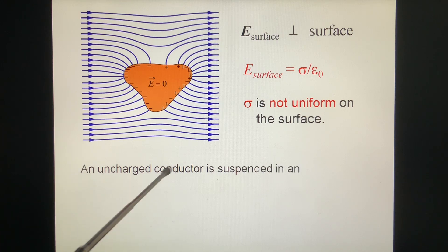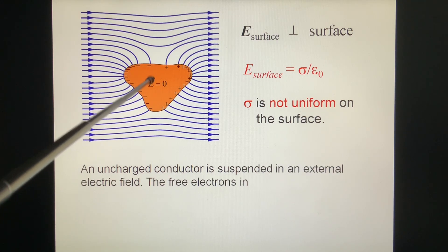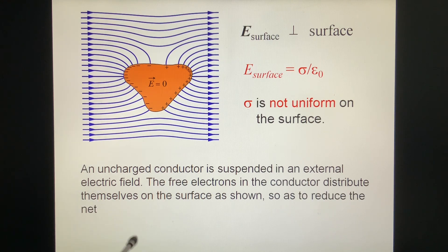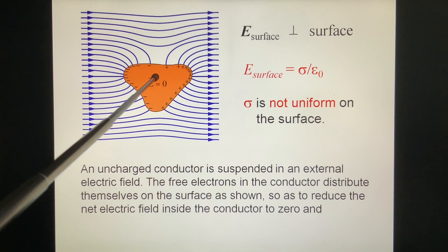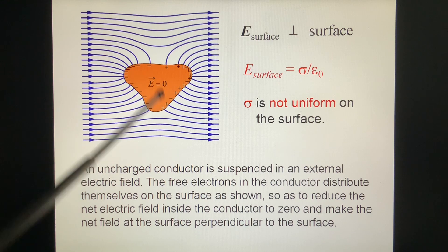An uncharged conductor is suspended in an external electric field. The free electrons in the conductor distribute themselves on the surface, so that to reduce the net electric field inside the conductor to zero and make the net field at the surface perpendicular to the surface. Because the electron is redistributed.